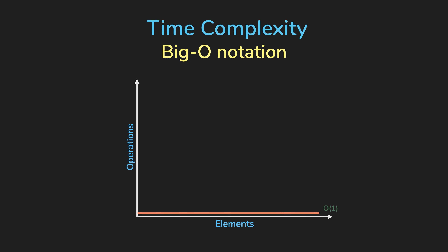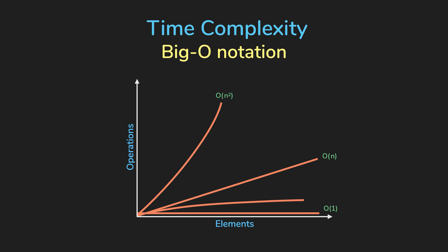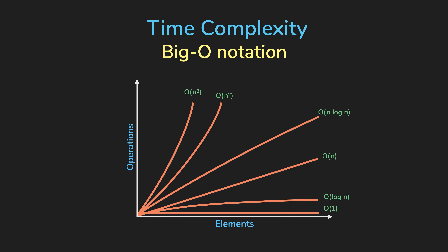We've seen three types of time complexities: constant time is when we're doing a simple operation; linear time is when we loop through the input; and quadratic time is when there is a loop inside a loop. There is also logarithmic time complexity O(log N), a common example being when the input size is divided in half each loop, so fewer loops are needed. There are also linearithmic algorithms O(N log N), which are worse than linear but better than quadratic. Cubic time complexities are even worse than quadratic — think of a loop in a loop in a loop.